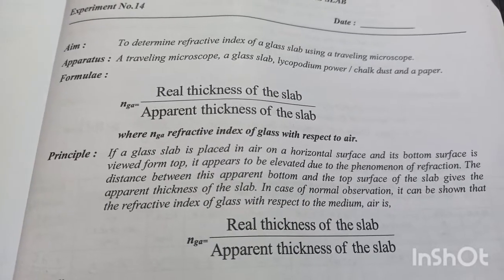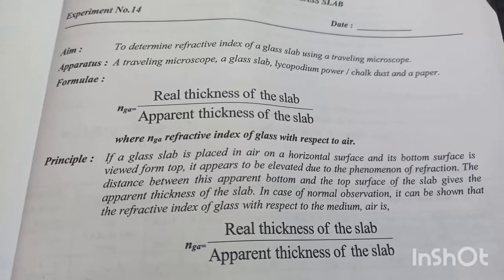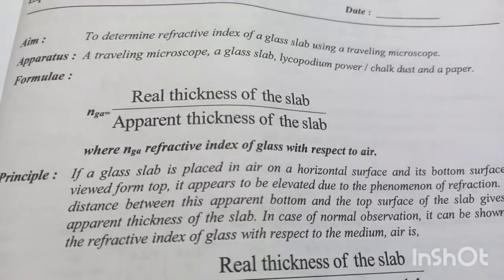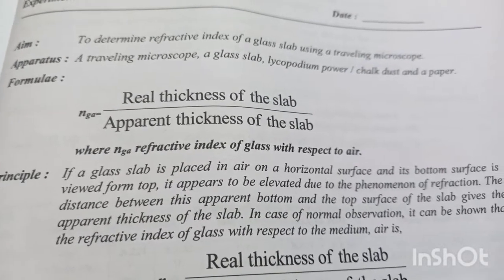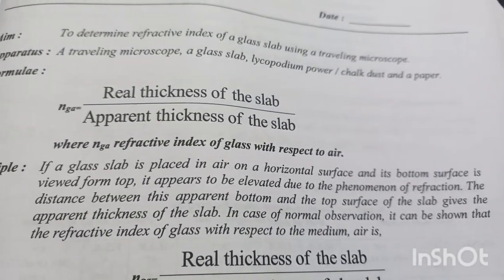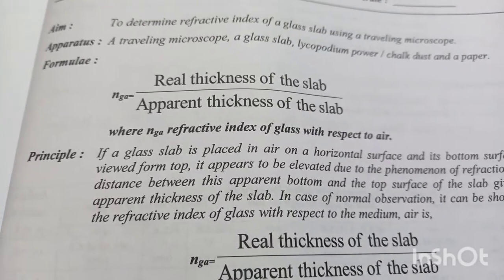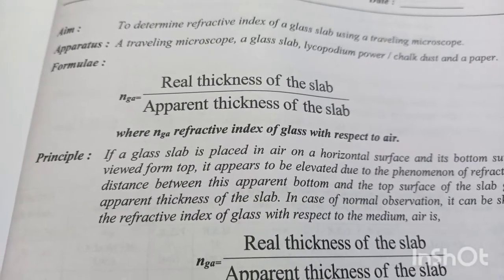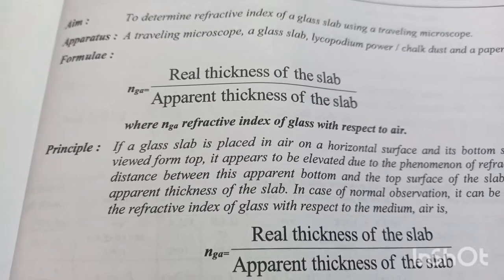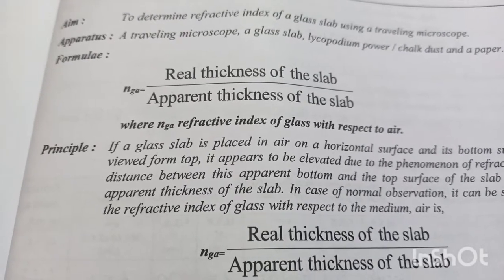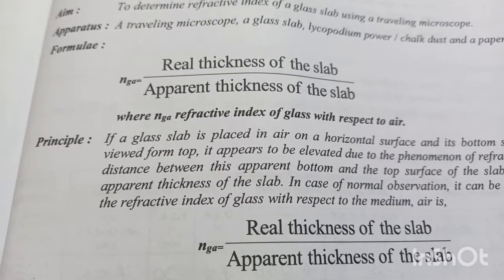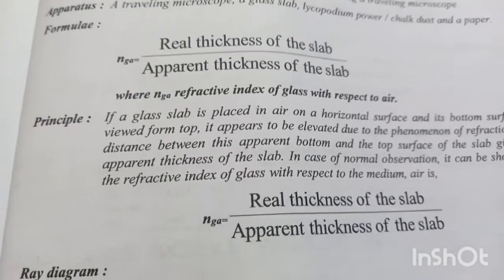The apparatus used in this experiment are: traveling microscope, a glass slab, chalk dust, and paper. The formula is: refractive index of glass (nga) equals real thickness of the glass slab upon apparent thickness of the slab — that is, real thickness divided by the apparent (false) thickness.